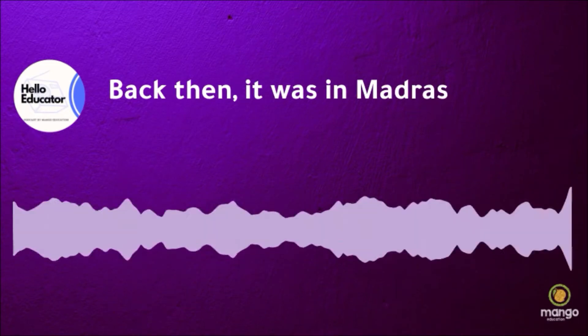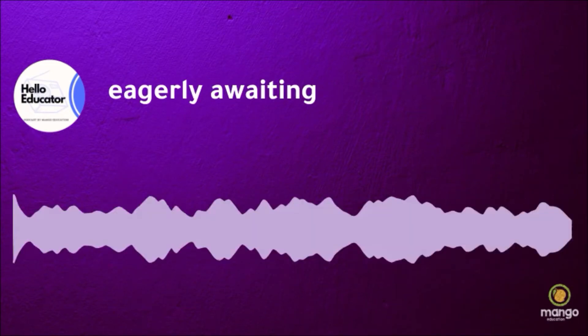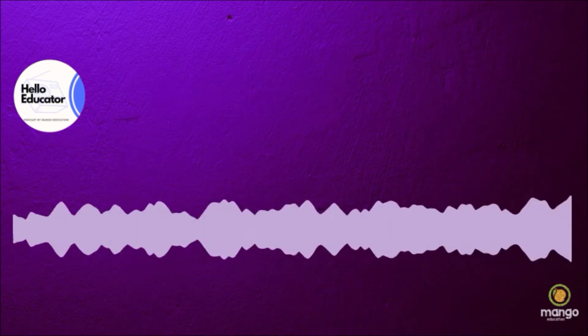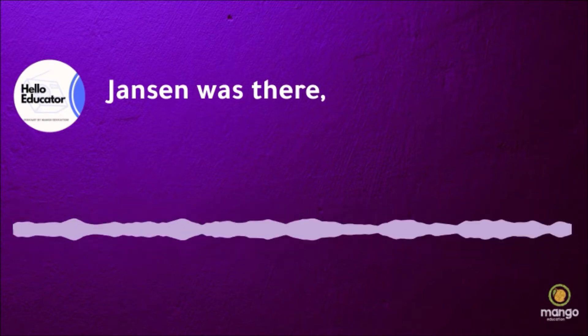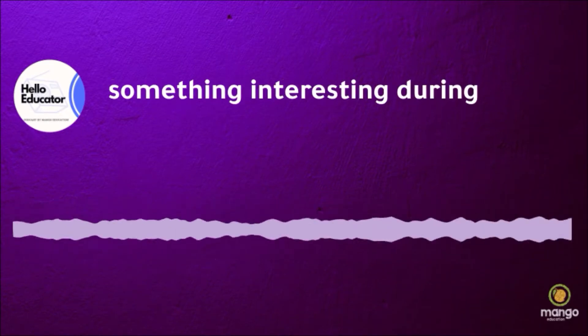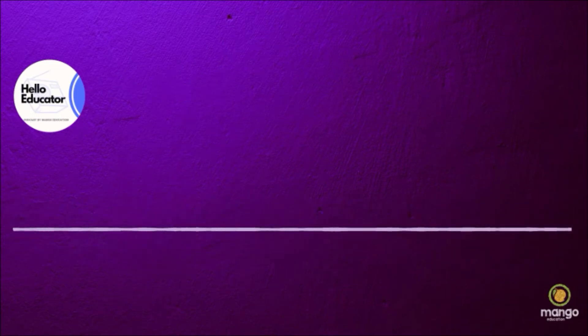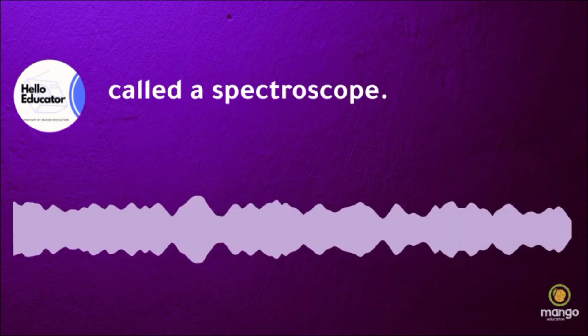They were eagerly awaiting a solar eclipse, a total solar eclipse on that day. Janssen was hoping to find something interesting during the eclipse. He had a very special device with him to observe the eclipse, called a spectroscope.